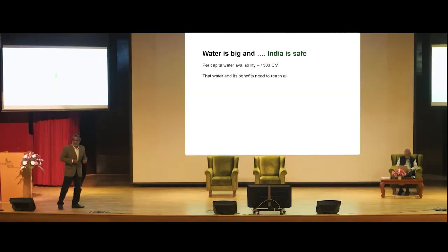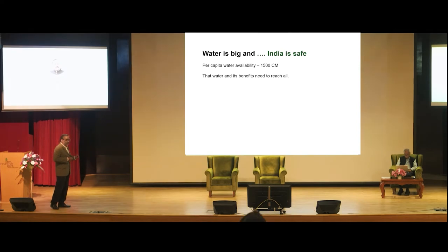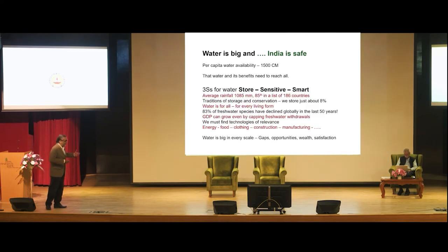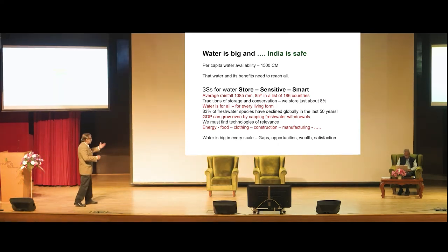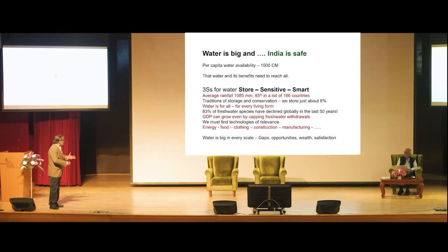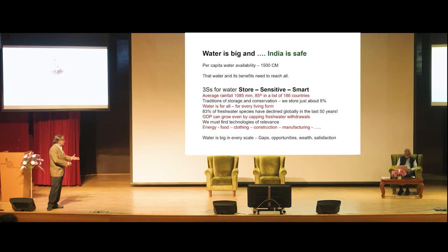Per capita water availability is just 1,500 cubic meters in India, and its benefits should reach everyone — yet we have not built the technologies and management to do this. For quality water, three S's are needed: we have to store water well, be sensitive to various requirements, and be smart. India's average rainfall is not bad at all, but we store just about 8% of that water, whereas most developed nations store around 250% of their rainfall.